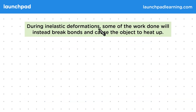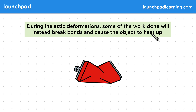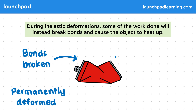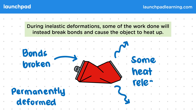During inelastic deformations, some of the work done will instead break bonds and cause the object to heat up. Remember, during inelastic deformations, objects won't change back to their original shape. Work is done to break bonds, so the object won't store energy to try and bring it back to its original shape — so it's permanently deformed. And during this process, energy is released as heat as a result of breaking bonds.